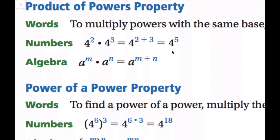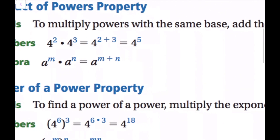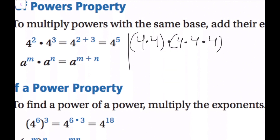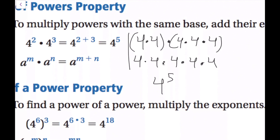Now let's look at why this works using the number example. Four squared is four times four, and four cubed is four times four times four. Since the order of multiplication doesn't matter, we can rewrite this as four times four times four times four times four — five fours being multiplied — which in exponent form is four to the fifth power.